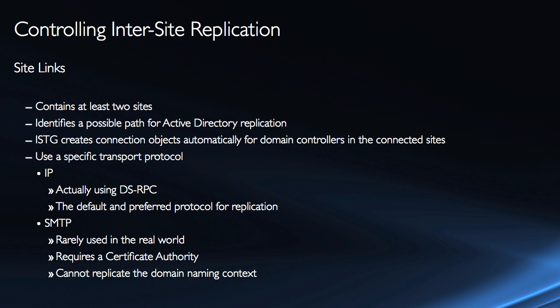When you create a new site, you have to link it — you have to connect it to a site link. Your best bet is to create additional links. Additional links must contain at least two sites and identify a possible path for Active Directory replication, controlling what the ISTG will do. The ISTG will create connection objects automatically for domain controllers in the connected sites.